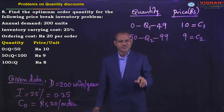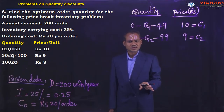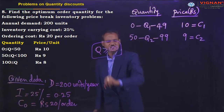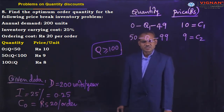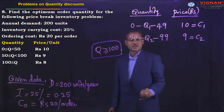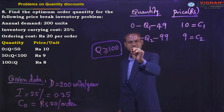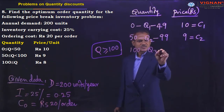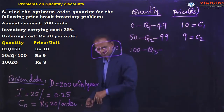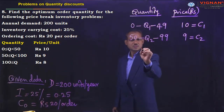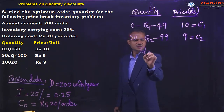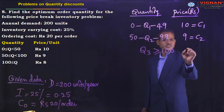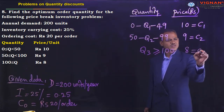Coming to the last range, Q3 is greater than or equal to 100. The minimum order quantity must be 100 or more. The cost price for this range C3 is equal to 8 rupees.